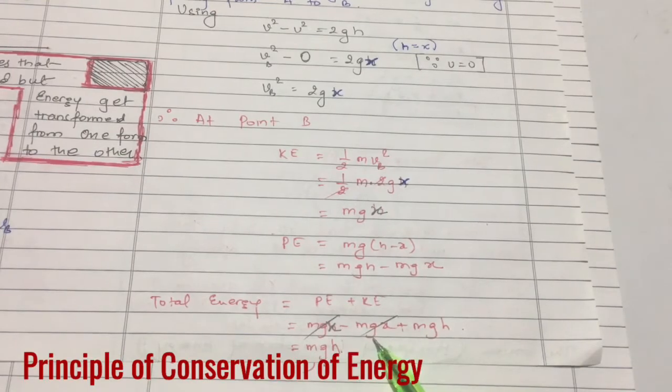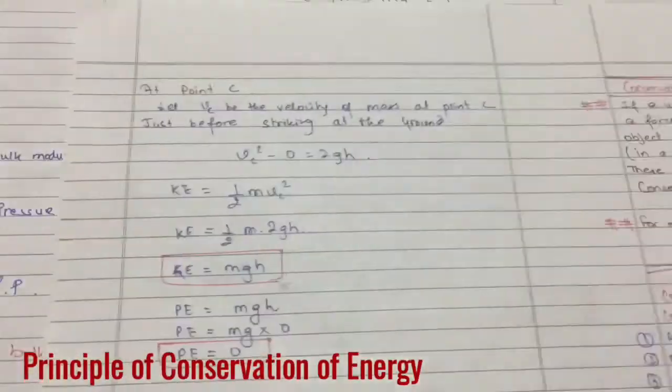Potential energy is mg(h minus x). Total energy is always potential energy plus kinetic energy and the answer is mgh.